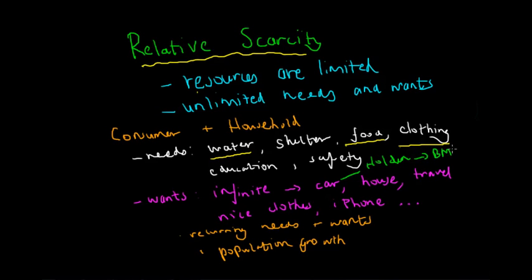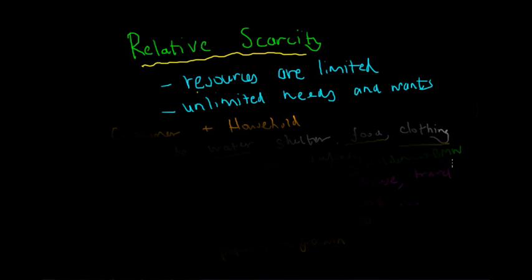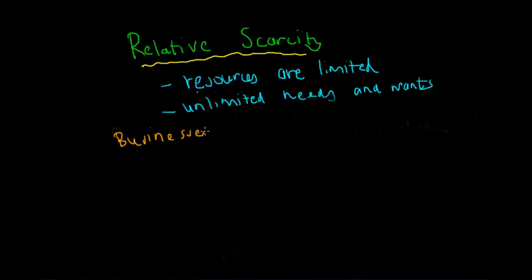This shows that our needs and wants change over time, which makes them even more unlimited. That's the household and consumer sector and how these needs and wants are unlimited. Now let's look at the business sector and how their needs and wants are similarly unlimited.